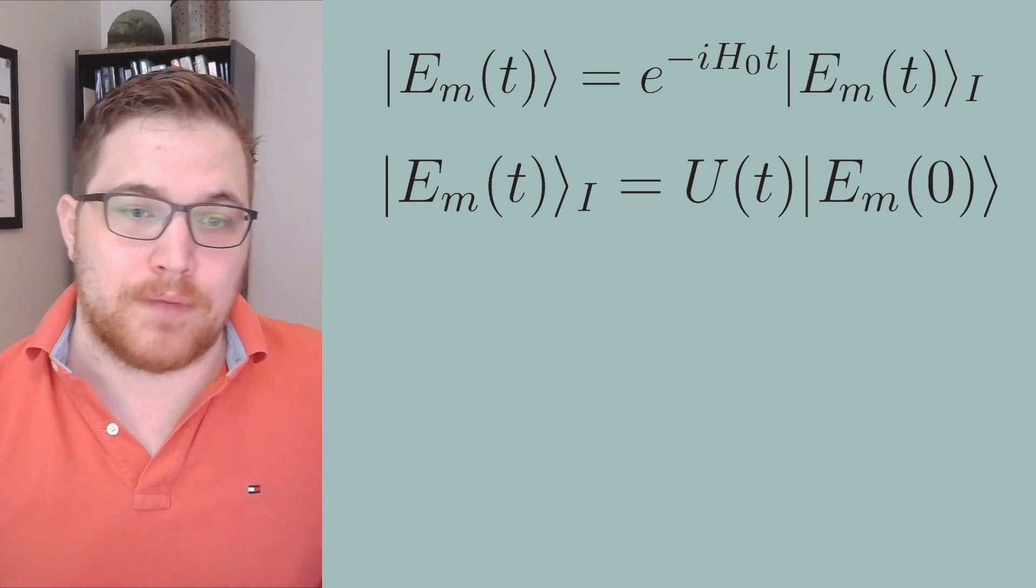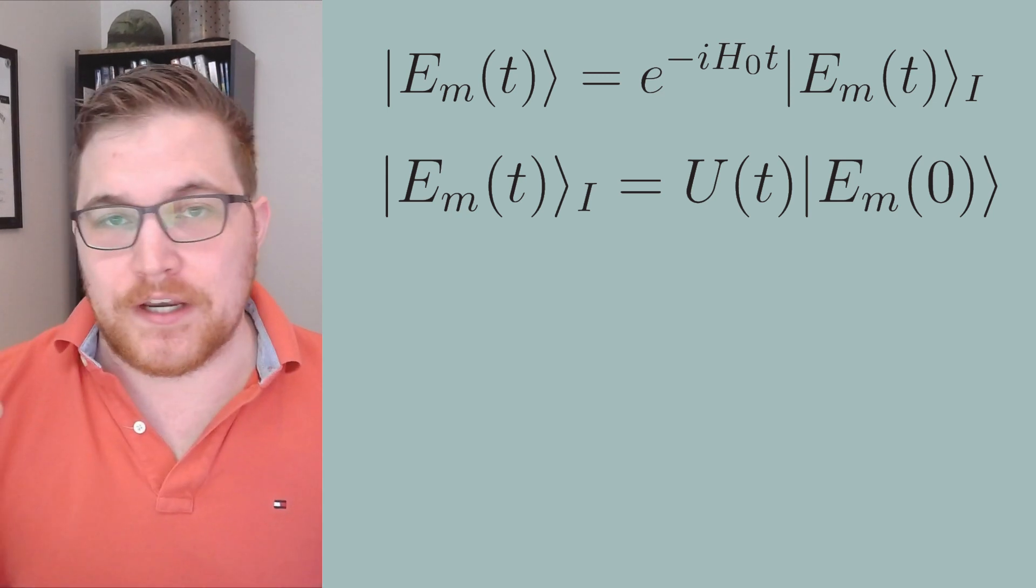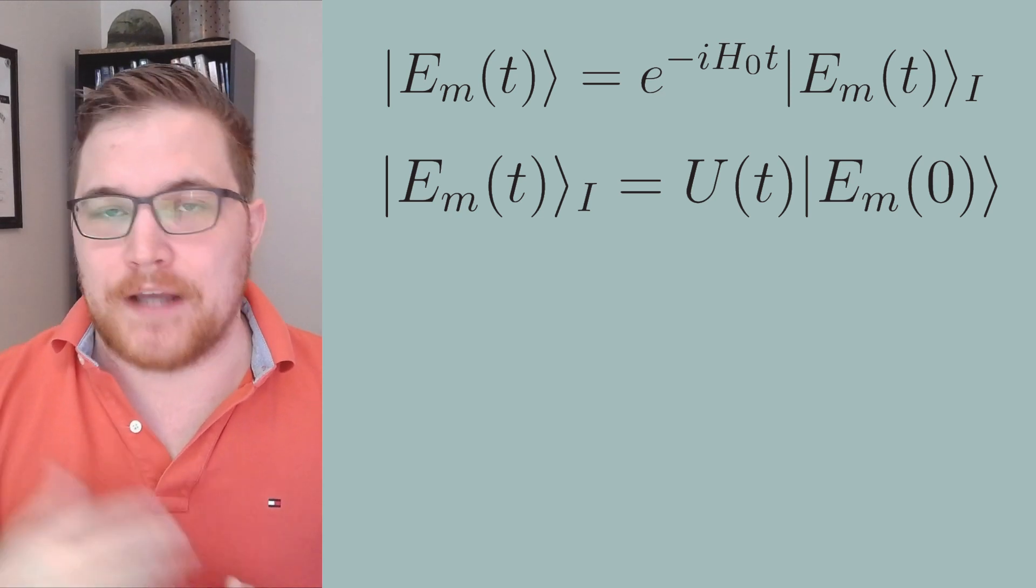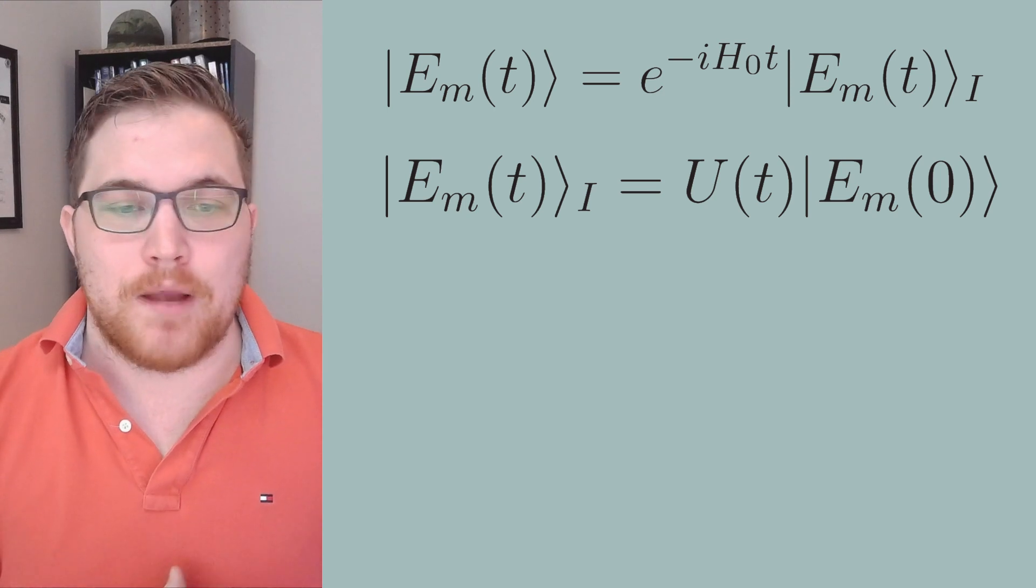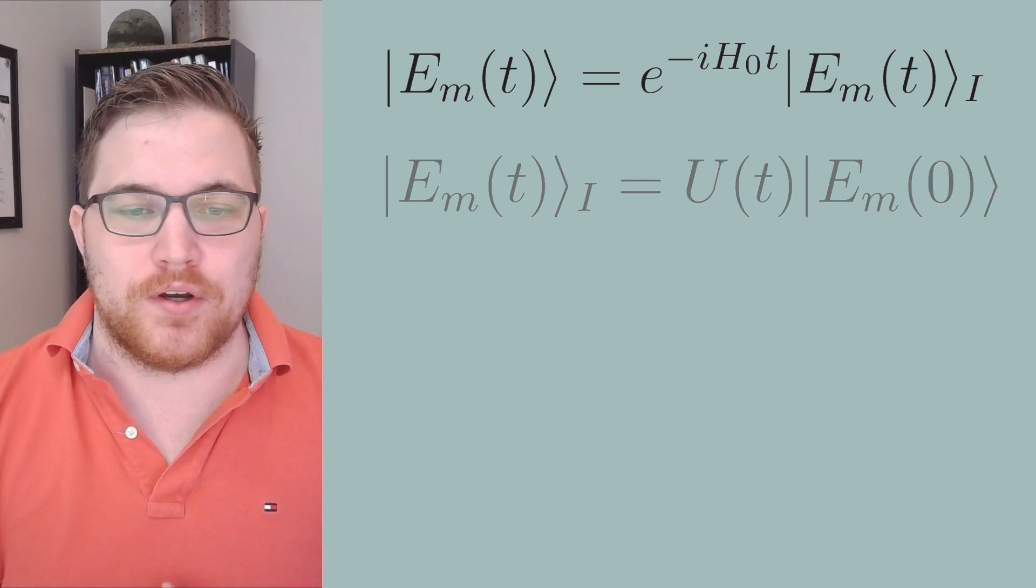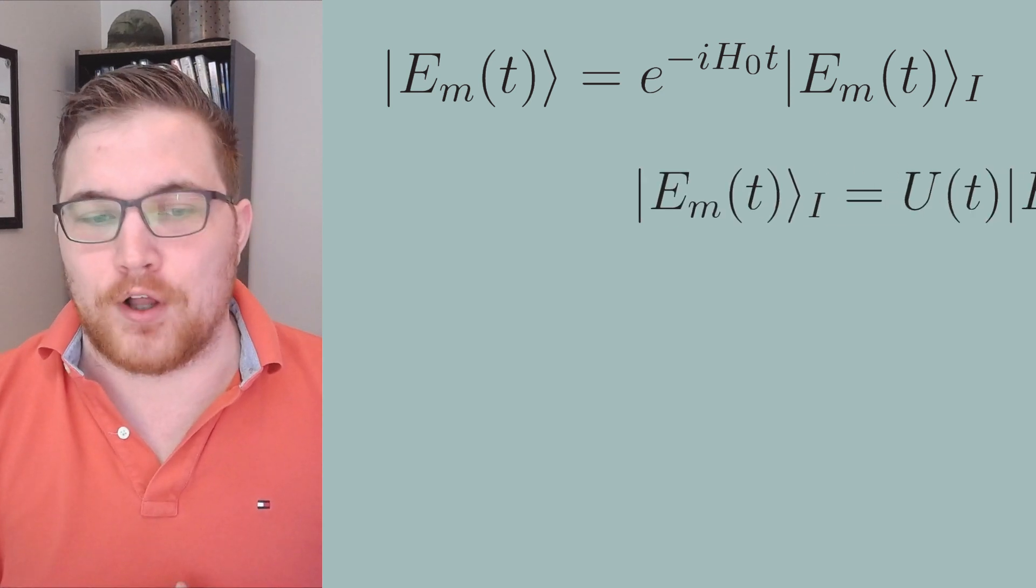Expanding the definition of the interaction picture state, we see that we can evolve it in time with the following expression, which links our time t with the initial conditions of the interaction picture. I put the t equals zero here to make things more clear,